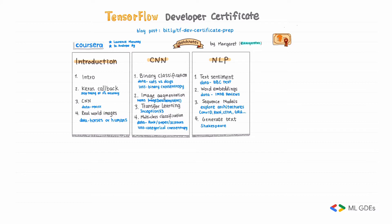Course 3 focuses on NLP. Week 1 teaches you text sentiment with BBC data, and week 2 teaches you word embeddings with IMDB reviews data. Week 3 moves into the topic of sequence models. You will explore different neural network architectures with Conv1D, RNN, LSTM, GRU, etc. In week 4, you will learn how to generate Shakespeare text with LSTM.